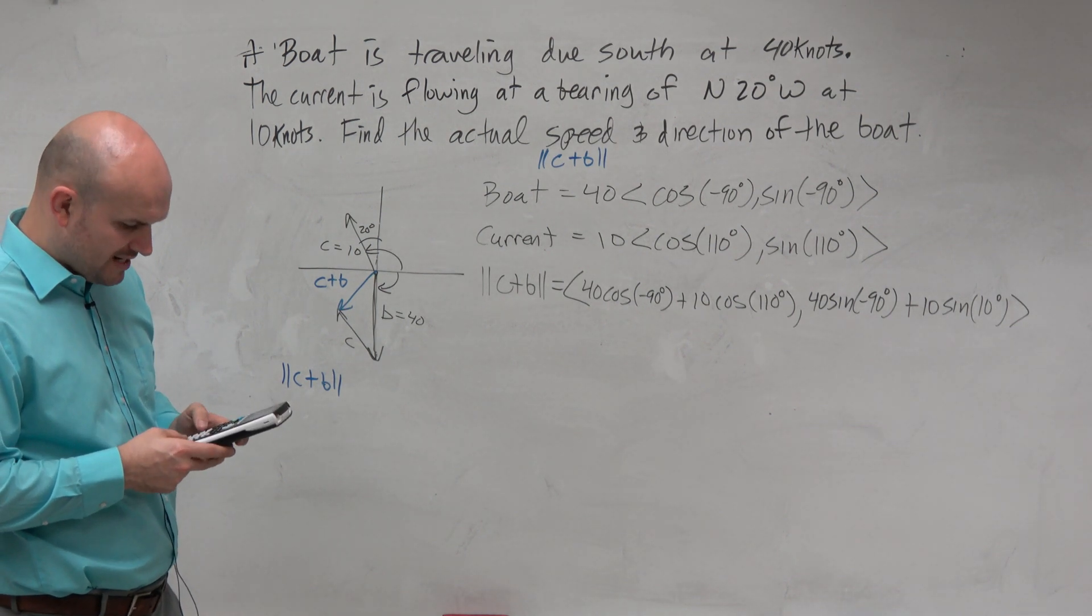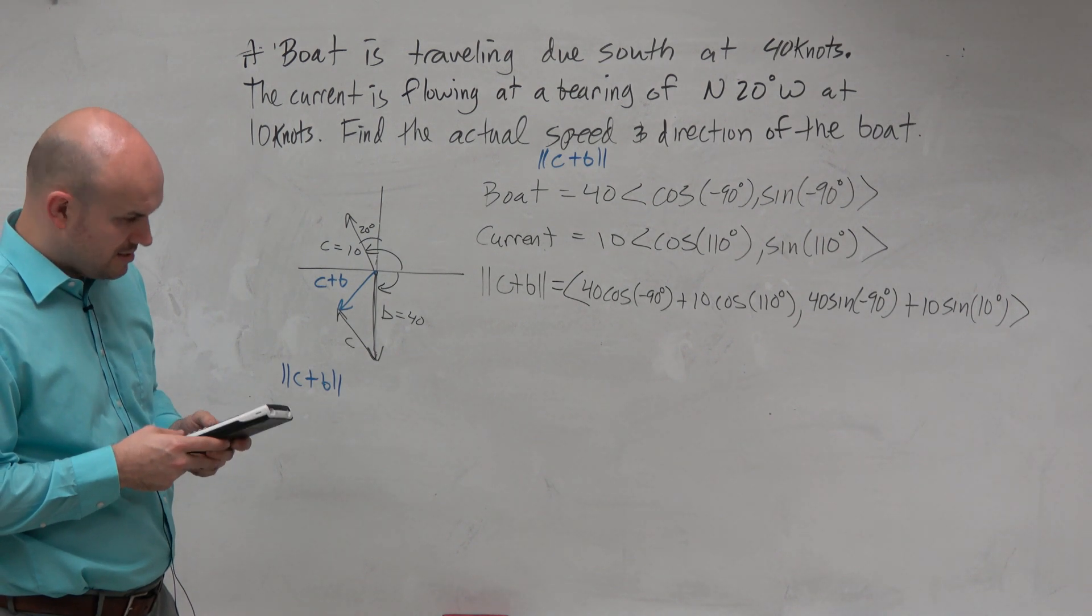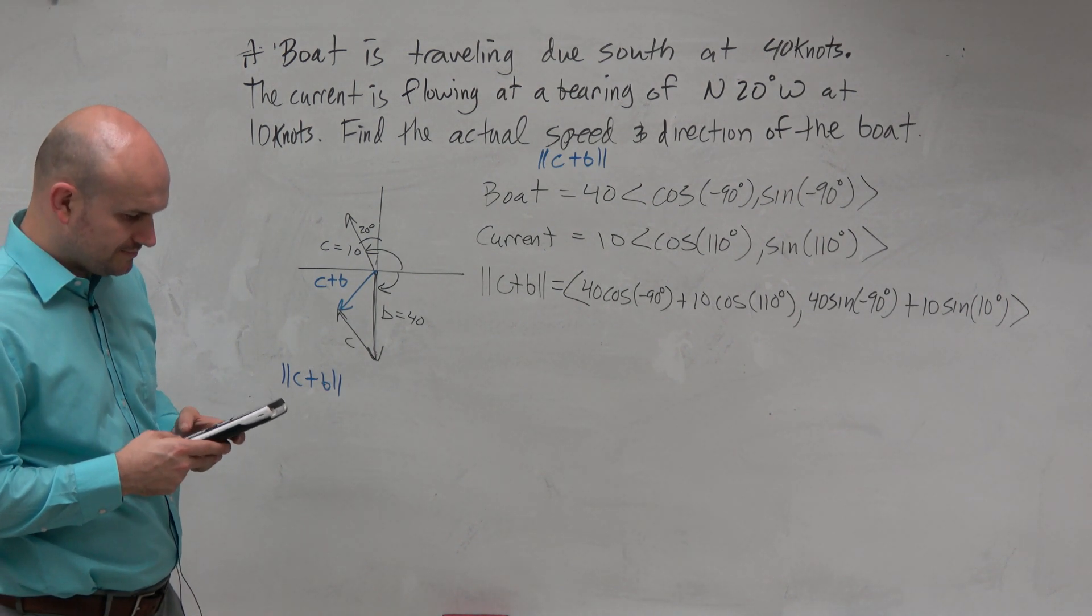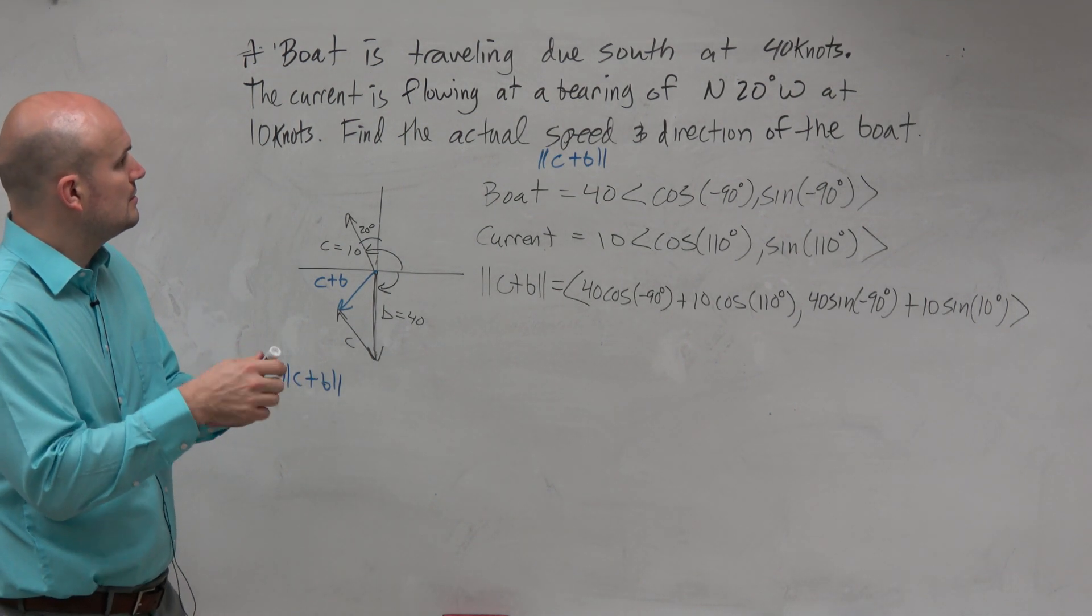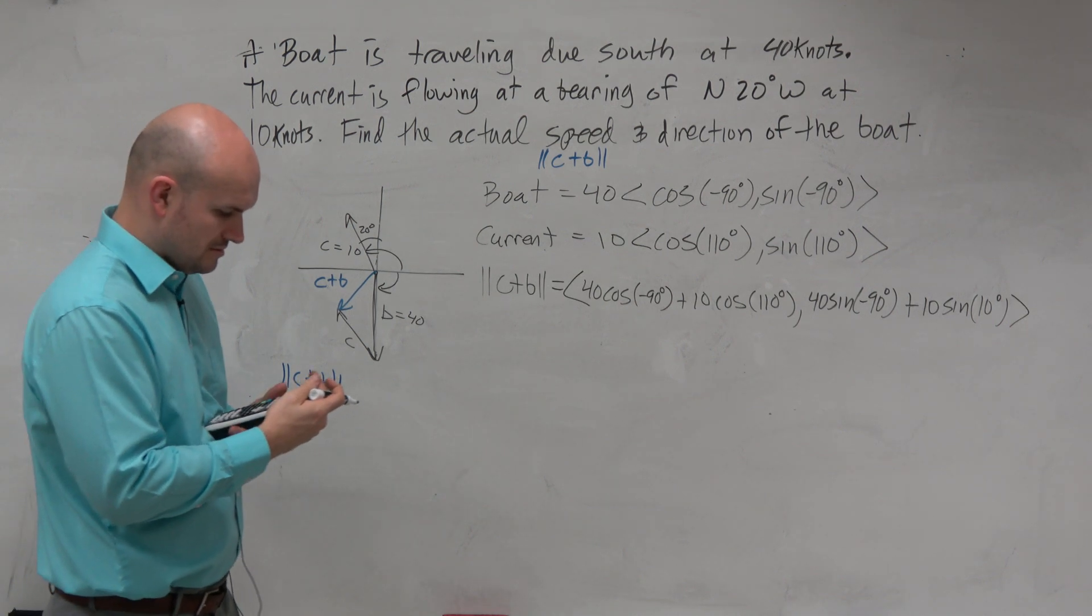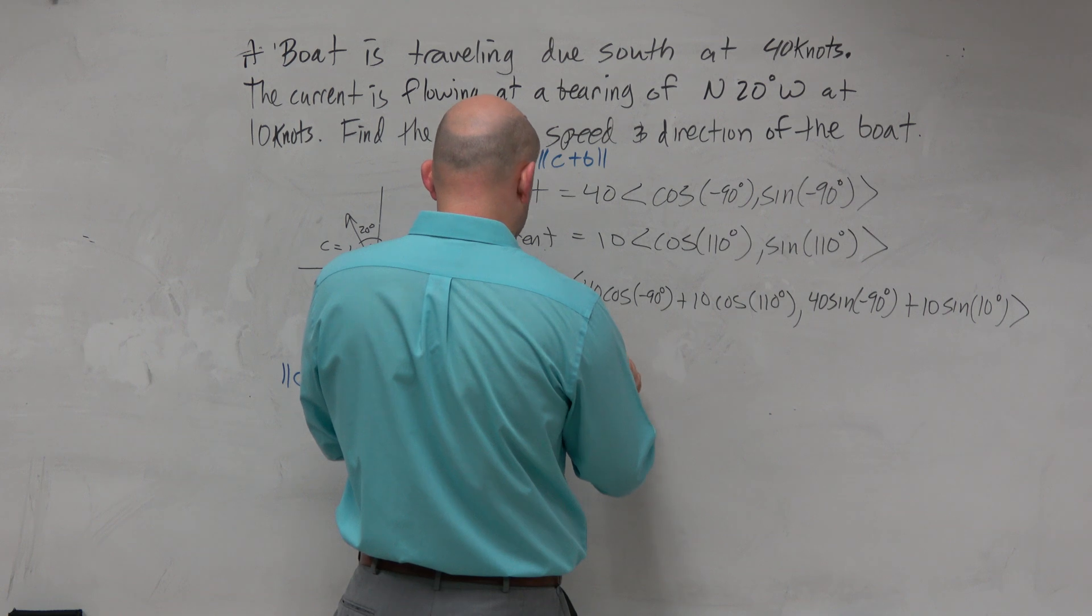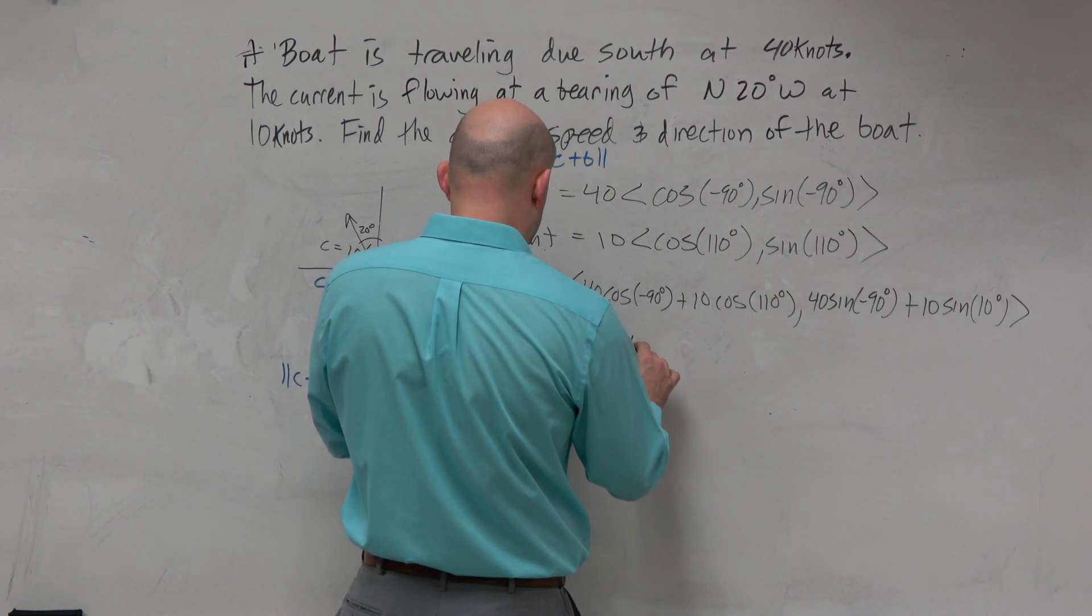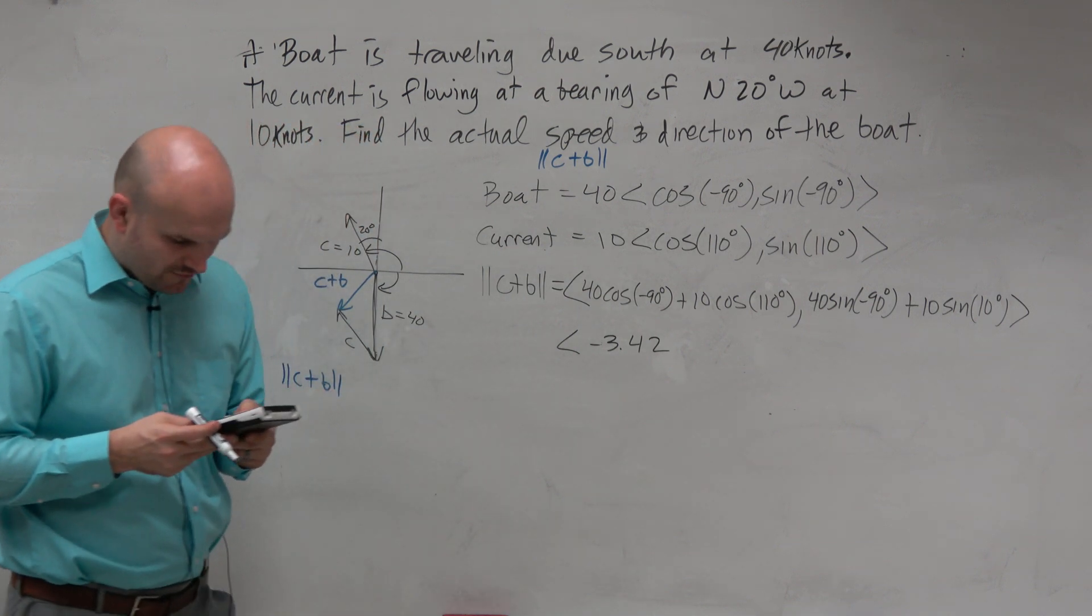So, 40 cosine of negative 90 plus 10 cosine of 110. And that's giving me a negative 3.42, which I'm going to store as alpha A.